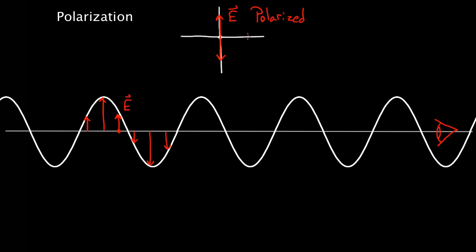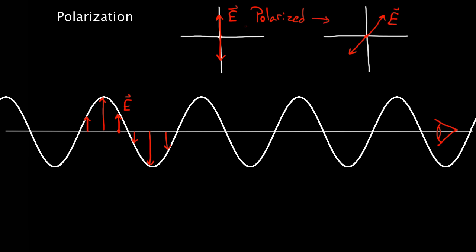Or it could be polarized horizontally, or it could be polarized diagonally. You could have this wave polarized along any direction. A light ray coming in diagonal, where the electric field oscillates like that, is also polarized. These are both polarized, because there's only one direction that the electric field is oscillating in.